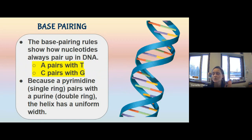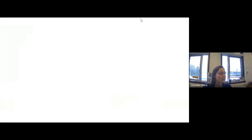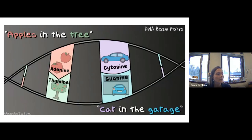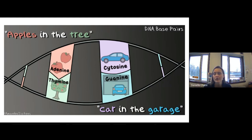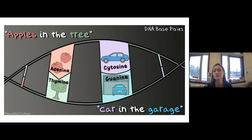You'll need to memorize the base pairing rules. One mnemonic: A pairs with T — 'Akron Tigers' — and G pairs with C — 'Go Cats.' Another: 'Apples in the Tree' for A with T, and 'Car in the Garage' for C with G. Whichever helps, repeat it until it's memorized, because we're going to do a lot with base pairing and knowing the pairs now will make later activities much easier.